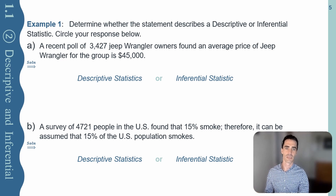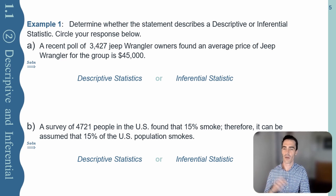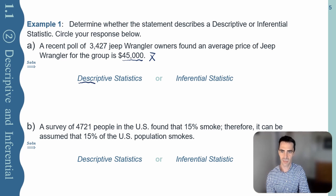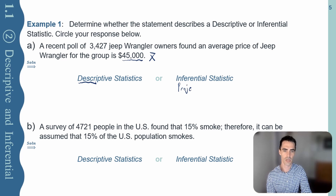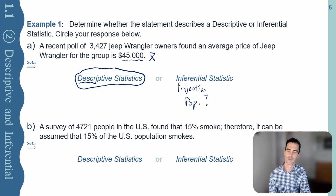Example one: determine whether the statement describes a descriptive or inferential statistic. A recent poll of 3,427 Jeep Wrangler owners found an average price of a Jeep Wrangler to be around $45,000 for the group. X̄ = $45,000. Does it describe the data, or is it a projection onto the population? Since it says 'for the group,' it's describing those 3,000 individuals — this is a descriptive statistic.